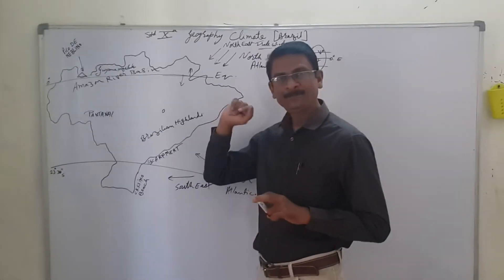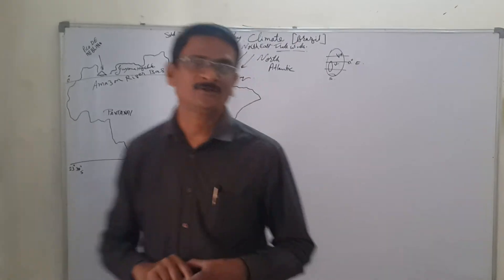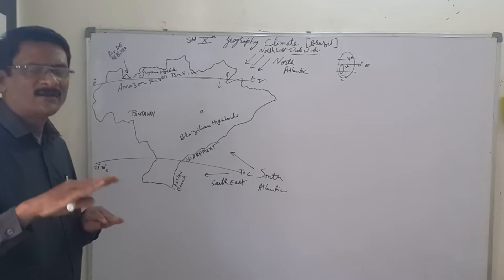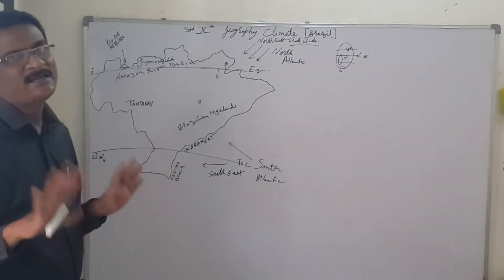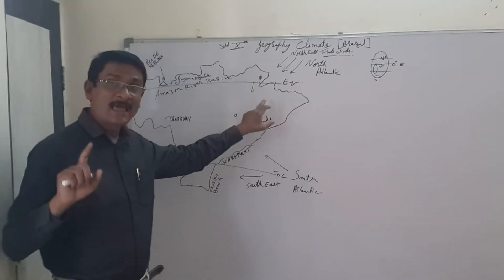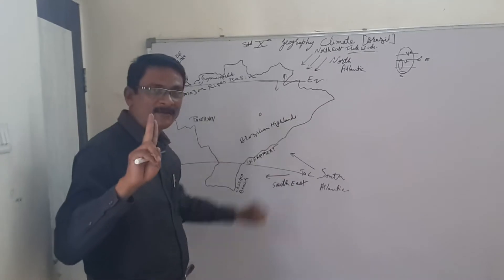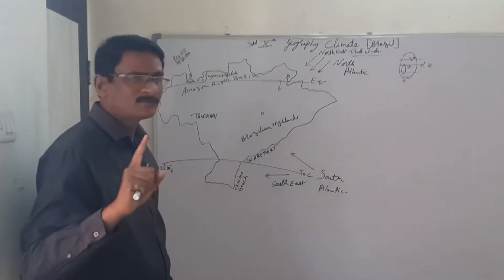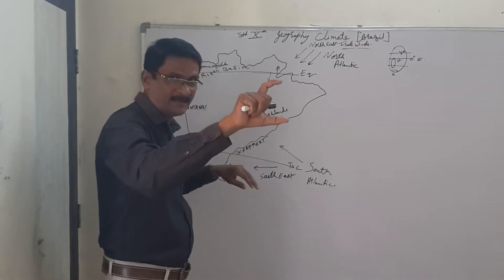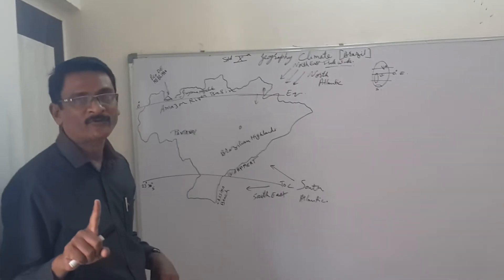Here, temperature is high. But at the same time, evaporation ratio is also more. So on an annual account, the difference in temperature is negligible — not too much. This is the area which has vast evergreen forests. Because of the equator, the 10-degree belt of 5 degrees north and 5 degrees south receives rain every day. We call it equatorial rain, or equatorial type of climate.